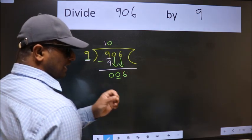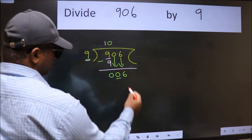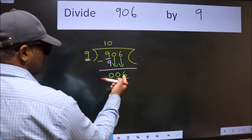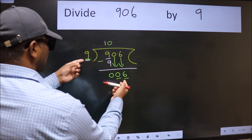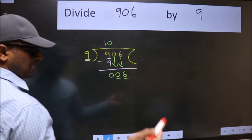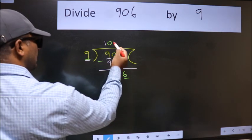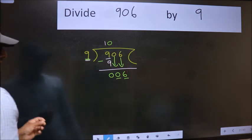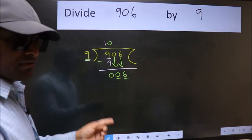After this step, the mistake happens. And the mistake is this. Here we have 6 and here 9. 6 is smaller than 9. So what many do is they directly put dot take 0, which is wrong. Why is it wrong?